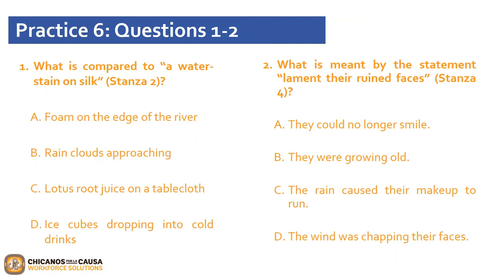Now that we've read Practice 6, let's start answering the following questions. Question 1 asks: what is compared to a water stain on silk? Is it A, foam on the edge of the river? B, rain clouds approaching? C, lotus root juice on a tablecloth? Or D, ice cubes dropping into cold drinks? If you selected B, rain clouds approaching, that is the correct answer. As Stanza 2 states: 'patch of cloud spreads, darkening like a water stain on silk.' The following line mentions the coming rain: 'Write this down quickly before the rain.'